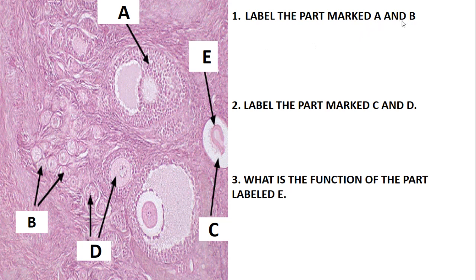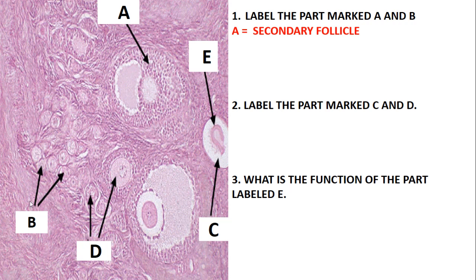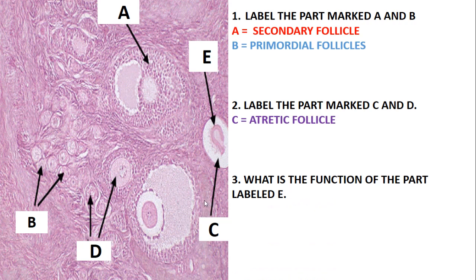The next slide — label the parts marked A and B. This is the ovary; the whole slide is the ovary. A is simply the secondary follicle, and B is just the primordial follicles. Label the parts marked C and D: C is just the atretic follicles, and D is just the primary follicle.